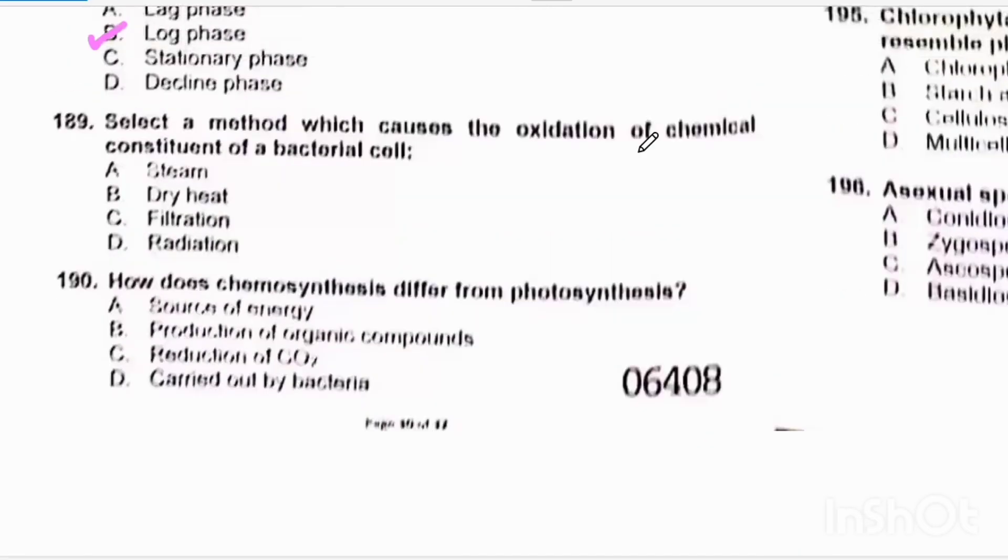Select a method which causes the oxidation of chemical constituents of a bacterial cell. Steam or moist heat causes coagulation, and dry heat causes oxidation. So correct option will be beta.